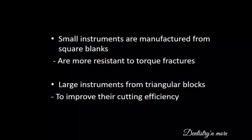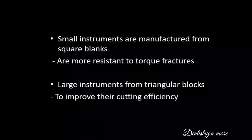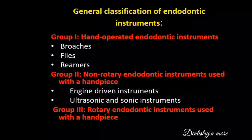Smaller size instruments, meaning files, are manufactured from square blanks and are more resistant to torque fractures, whereas large size instruments are manufactured from triangular blocks, as this improves their cutting efficiency.